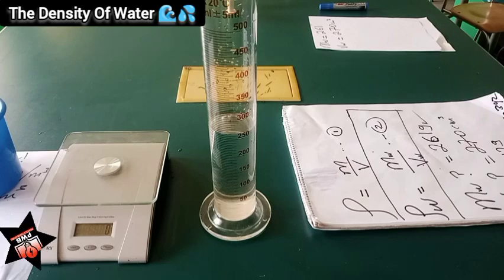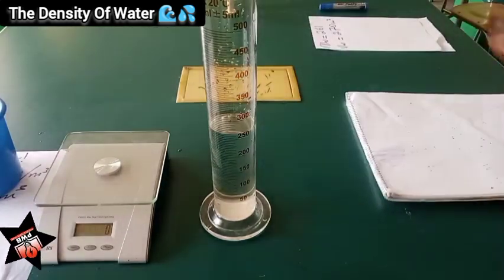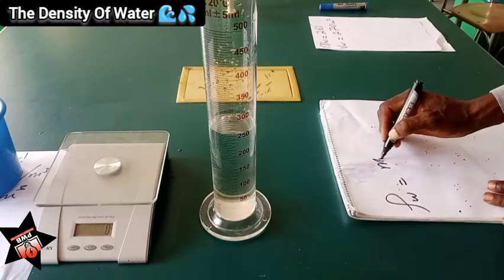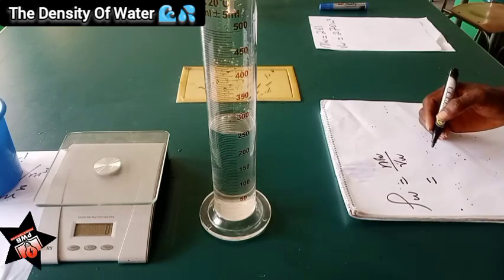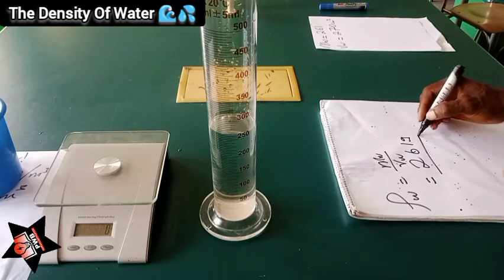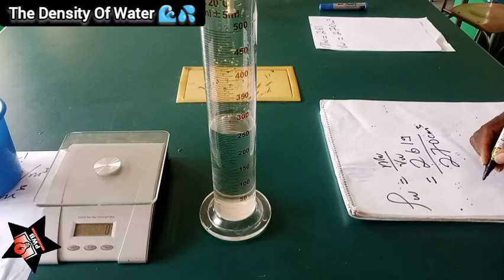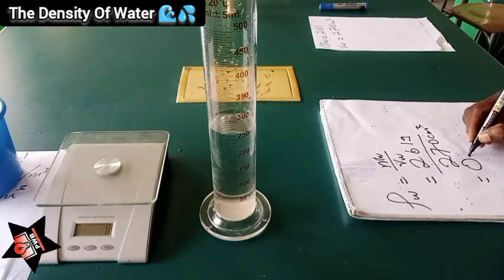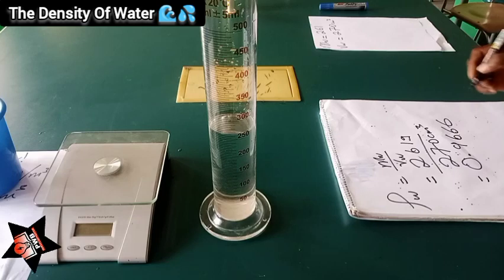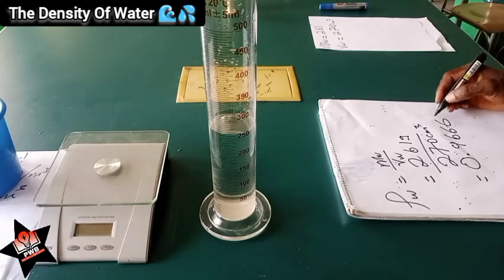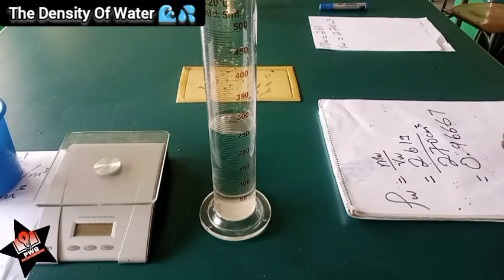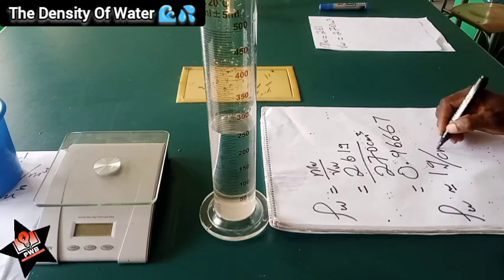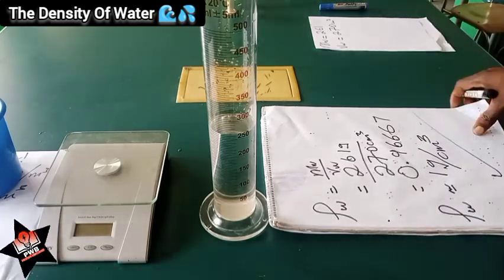We now have all the parameters: mw equals 261 grams and vw equals 270 cm³. Applying equation number two, the density of water equals mass of water divided by volume of water — that is 261 divided by 270 — which gives 0.9667 as a recurring decimal. So the density of water is approximately 1 gram per cm³, which is the universal density of water.